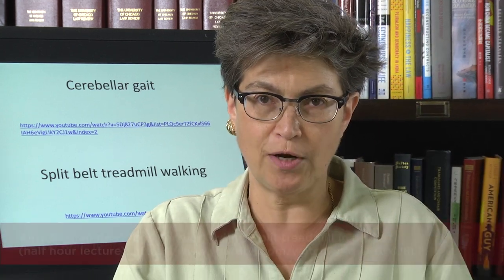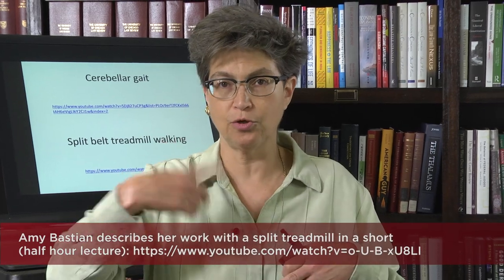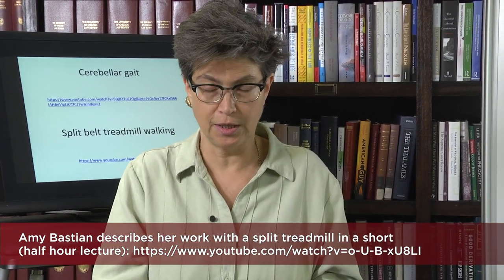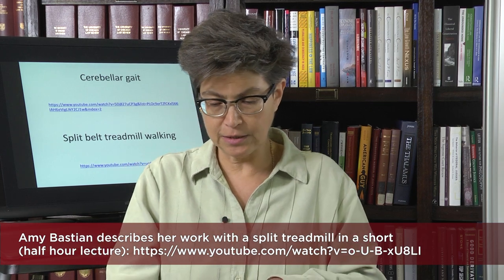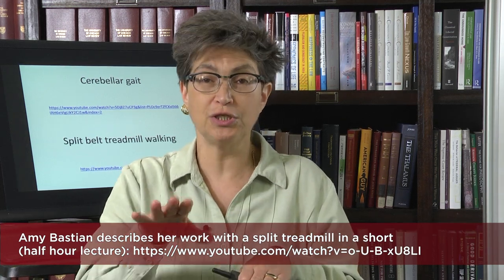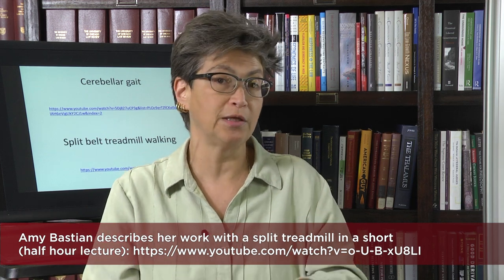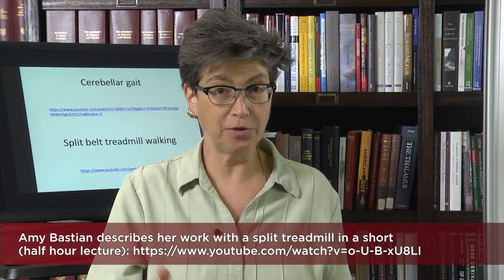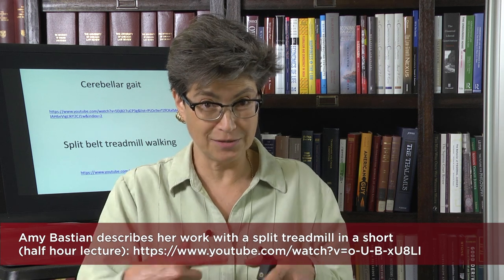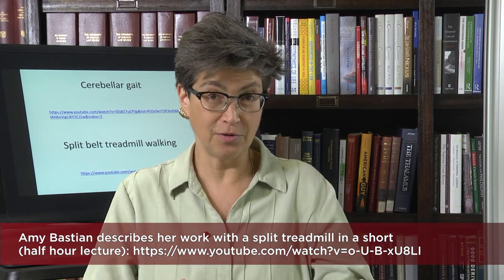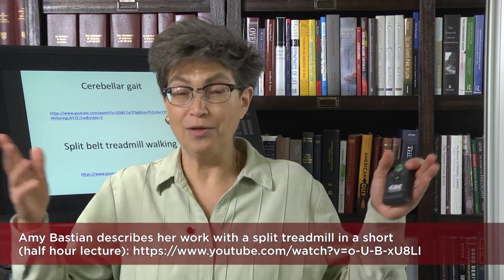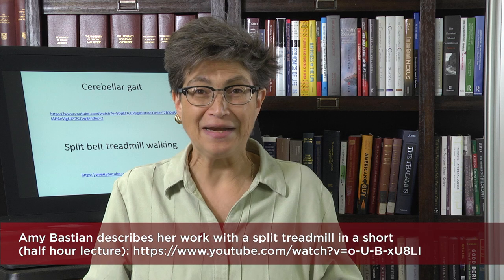What she did was she built a treadmill that has two half belts instead of having one belt that goes together. A person, a healthy control, walks on this split treadmill. At first the two belts are going in the same direction and same speed. Now you change the speed on one. The right is going slower than the left or faster. A healthy person will start to walk faster or slower to accommodate that change in speed with one leg. Then you slow it down even more, and then let's say you reverse it. Unbelievably, we can do that.